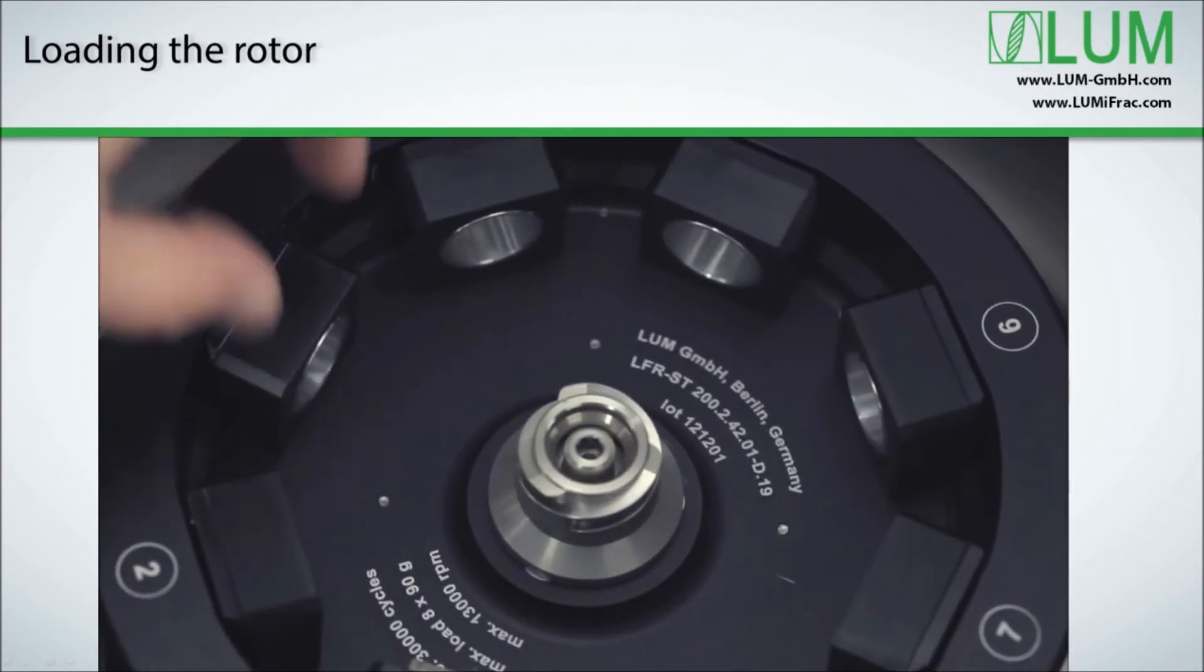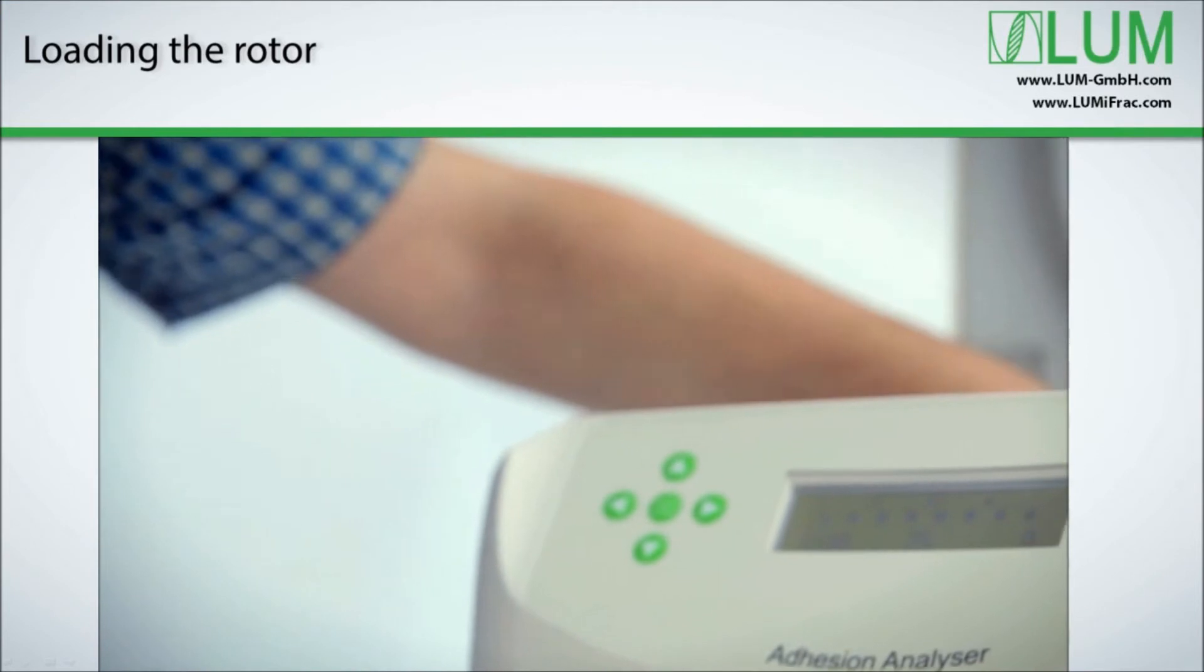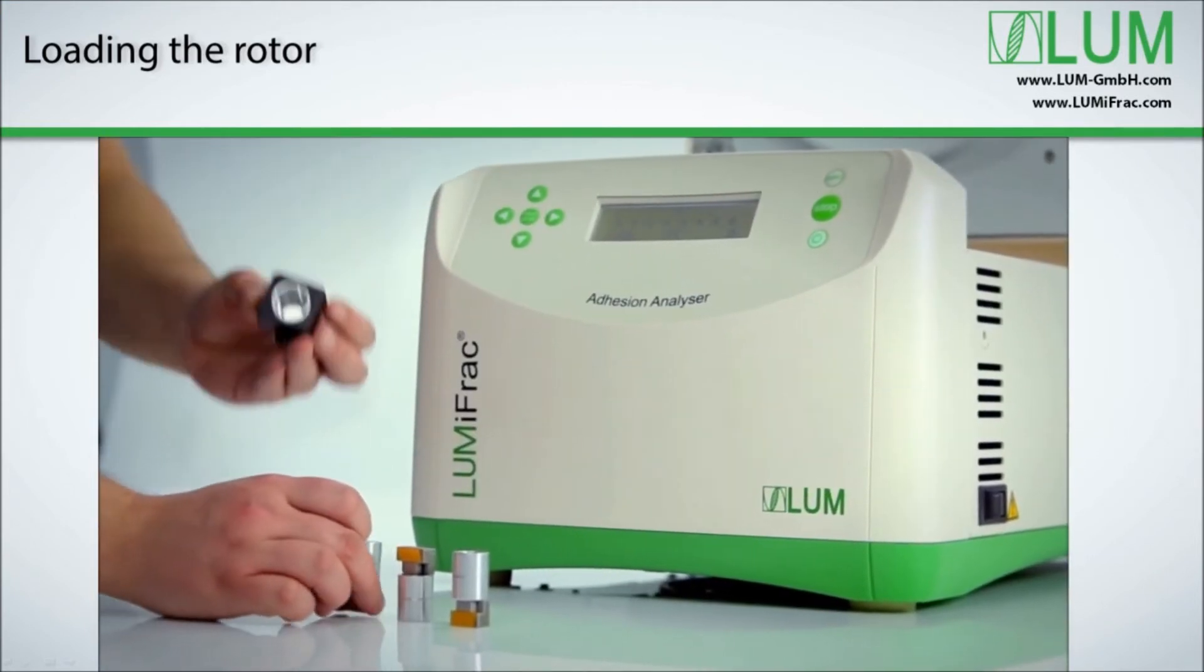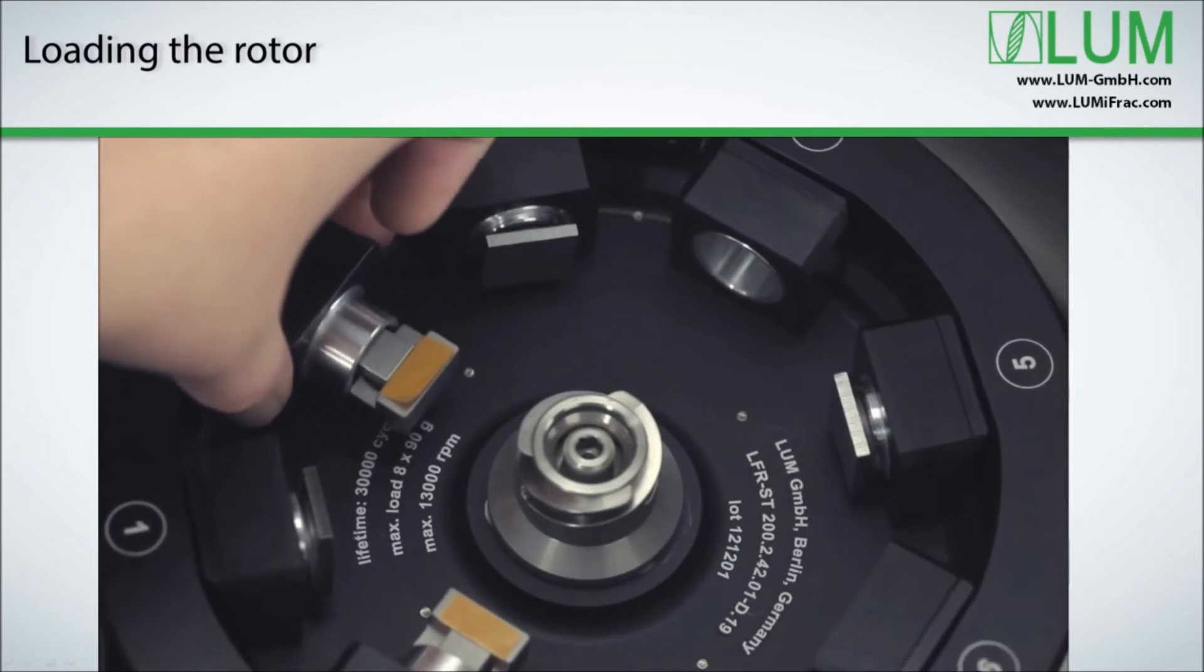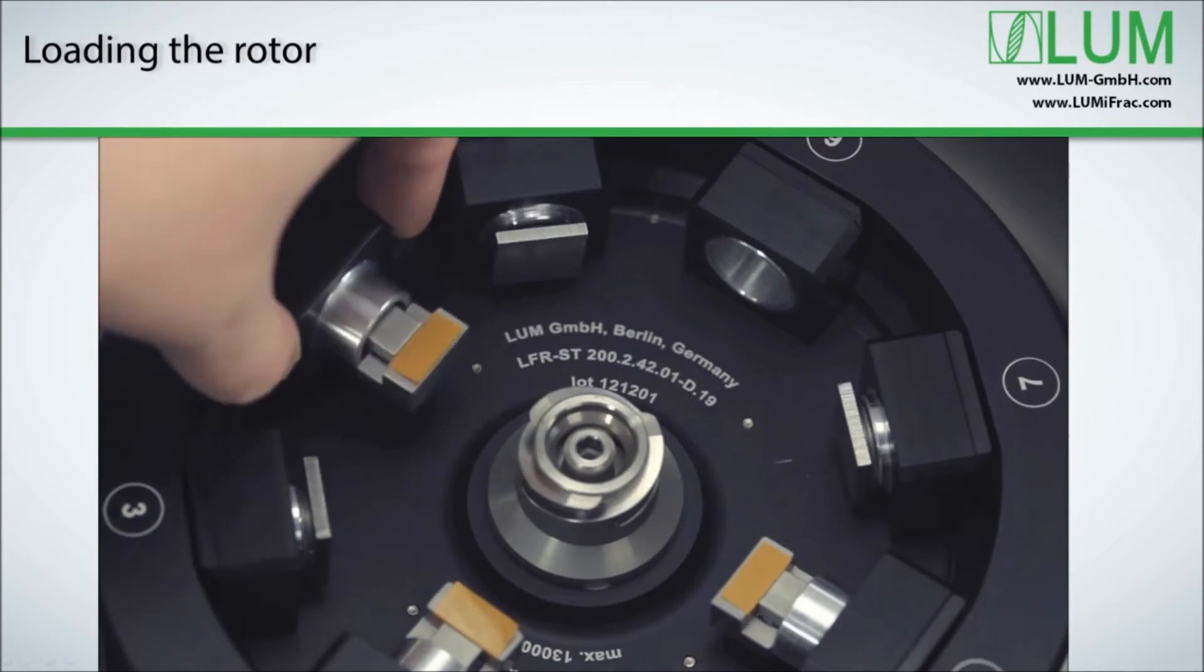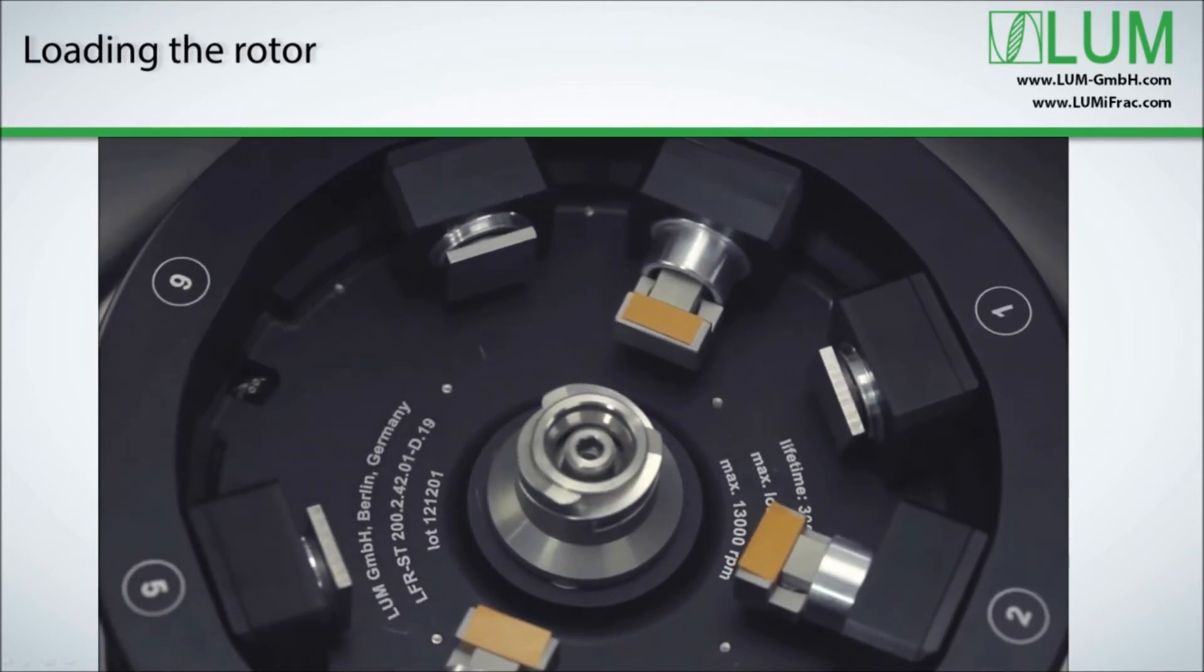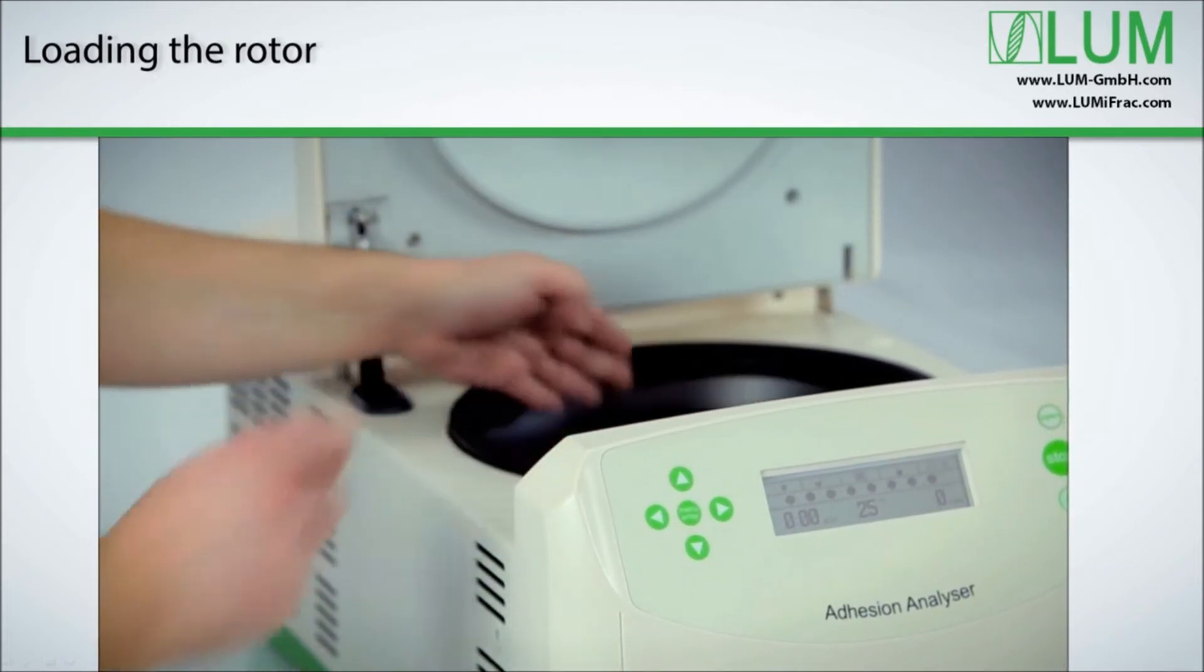We now take them out and begin to join every specimen into one module. The modules are then loaded into the rotor one by one. In this instance, you see we fully load the rotor, but of course you can test any equal quantity like 2, 4 or 6. You can test tensile and shear specimen together in one run. When the chosen number of modules is equipped, we close rotor and centrifuge lid.